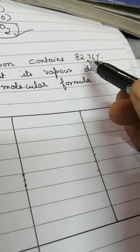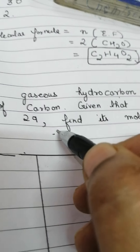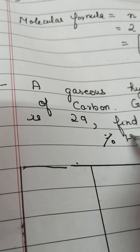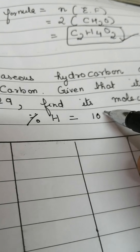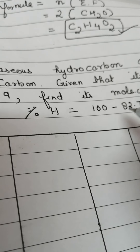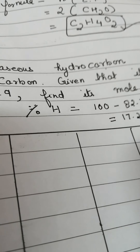Here they have given us only the percentage of carbon, and the percentage of hydrogen is not given. So how to calculate it? The first requirement is calculating the percentage of hydrogen. Everything totals 100%, so the percentage of hydrogen will be 100 minus 82.76, which comes out to be 17.24%.